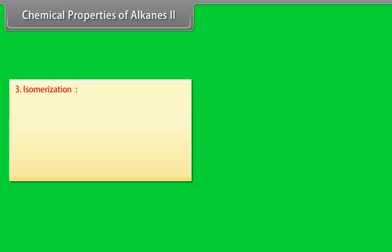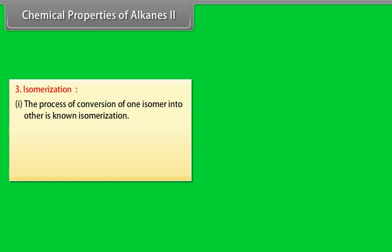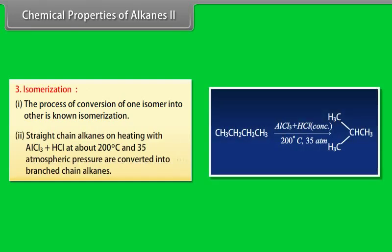Isomerization: 1. The process of conversion of one isomer into other is known as isomerization. 2. Straight chain alkanes are heated with AlCl3 plus HCl at about 200 degrees centigrade and 35 atmospheric pressure and are converted into branched chain alkanes.